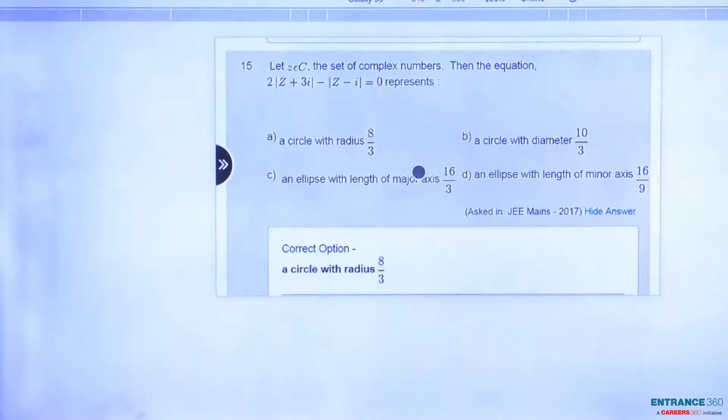Let's see the question. Let z belong to the set of complex numbers. Then the equation 2z plus 3i minus z minus i equal to 0. This equation will represent, we have to pick one correct option. What would be the correct answer?